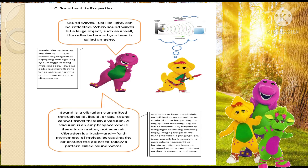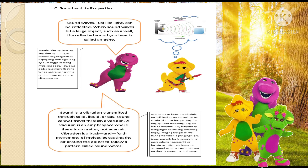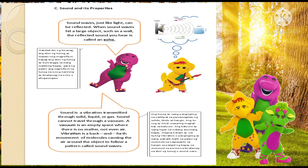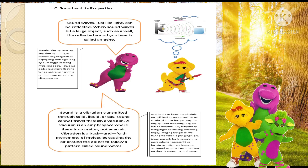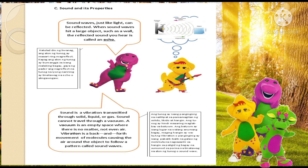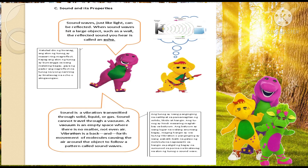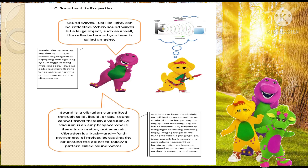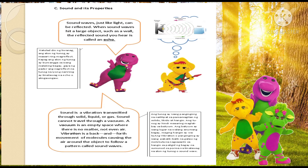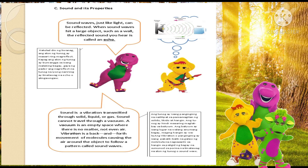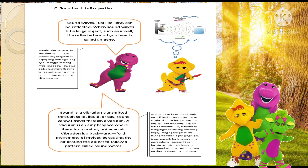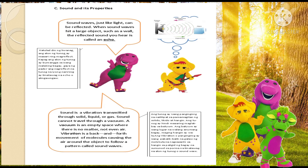Sound and its properties. Sound waves, just like light, can be reflected. When sound waves hit a large object such as a wall, the reflected sound you hear is called an echo. Sound is a vibration transmitted through solid, liquid, or gas. Sound cannot travel through a vacuum — an empty space where there is no matter, not even air. Vibration is a back-and-forth movement of molecules, causing the air around the object to follow a pattern called sound waves.